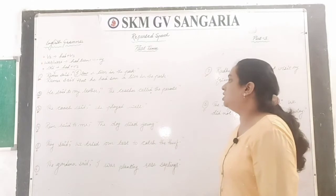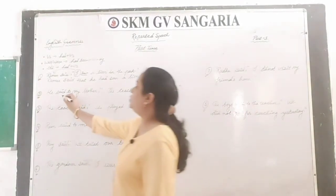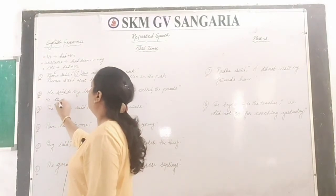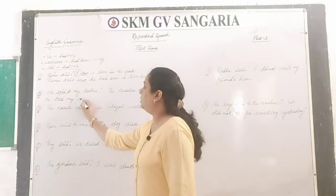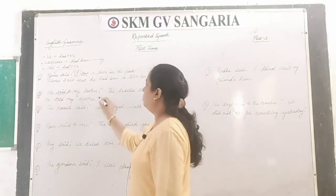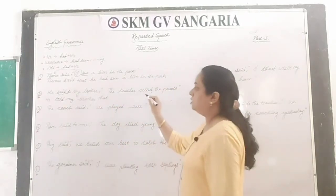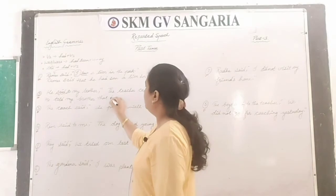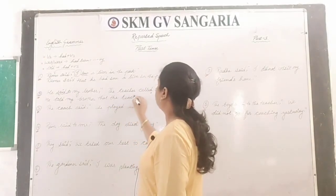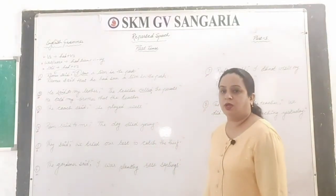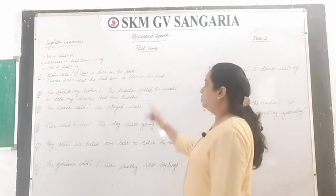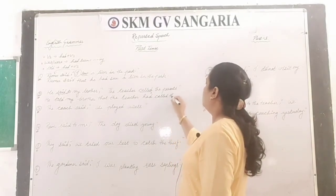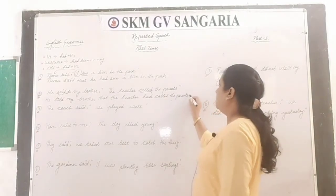He said to my brother, 'The teacher called the parents.' When there is 'said to' in the sentence, we change it to 'told'. So: he told my brother. The teacher is a third person and doesn't change. 'Called' is second form; third form is also 'called', so we add only 'had'. Answer: he told my brother that the teacher had called the parents.